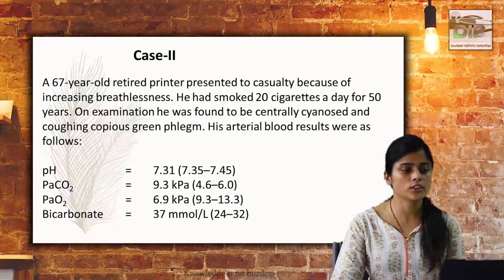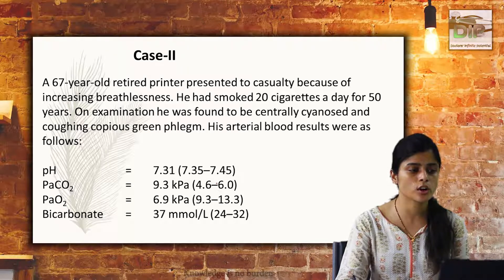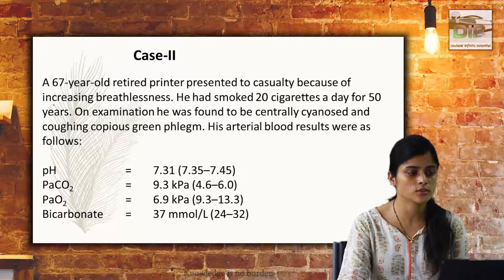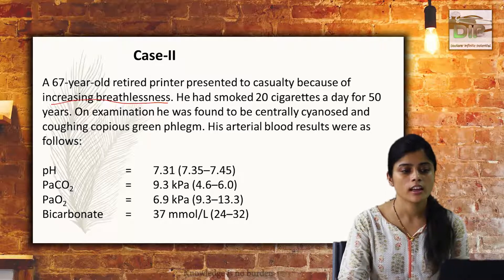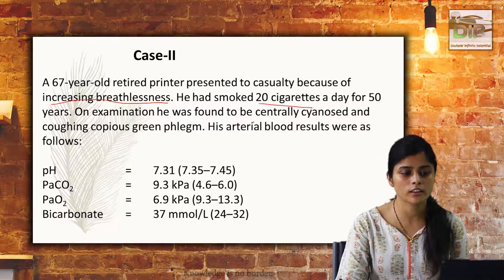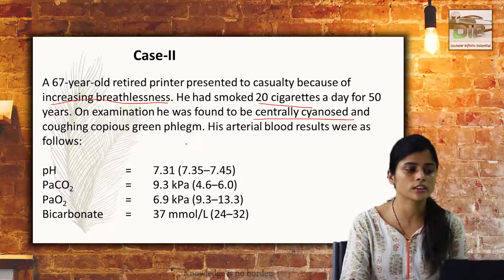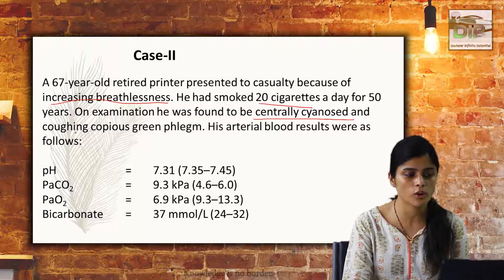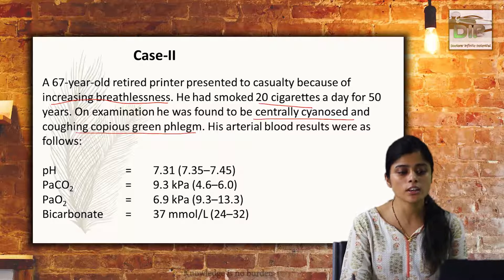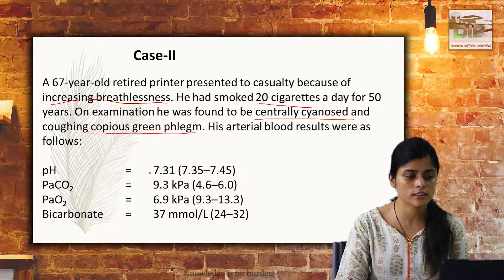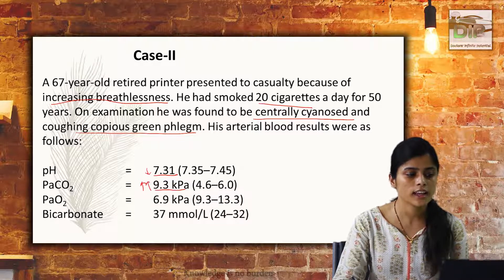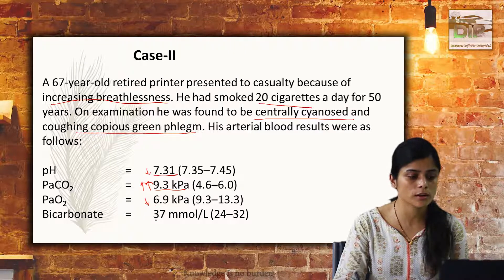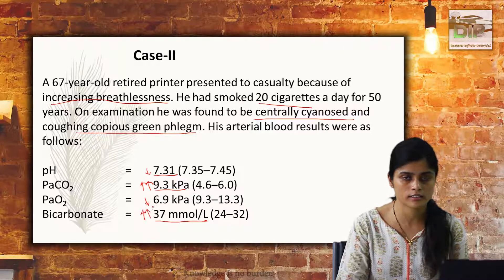The second case: a 67-year-old retired printer was brought to the hospital for increasing breathlessness. He was a chronic smoker and was found to be centrally cyanosed with copious coughing of green phlegm. His arterial blood results showed that pH was 7.31 — slightly reduced, PCO2 was very high, PO2 was also reduced, oxygen saturation was reduced, and bicarbonate level is at the higher range.